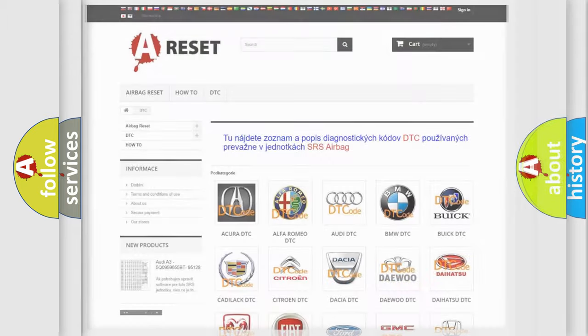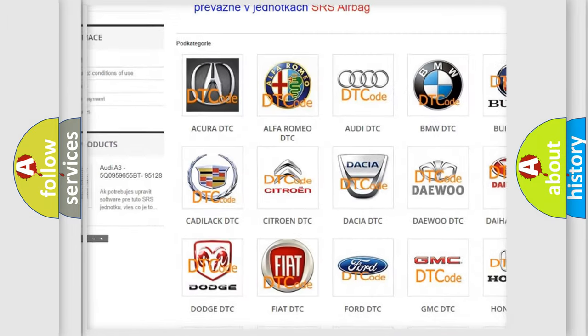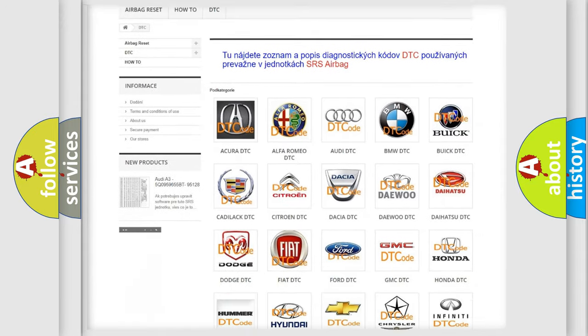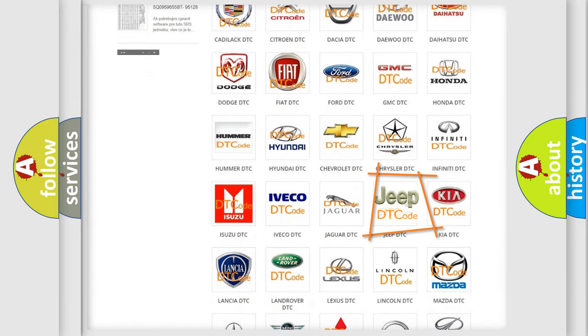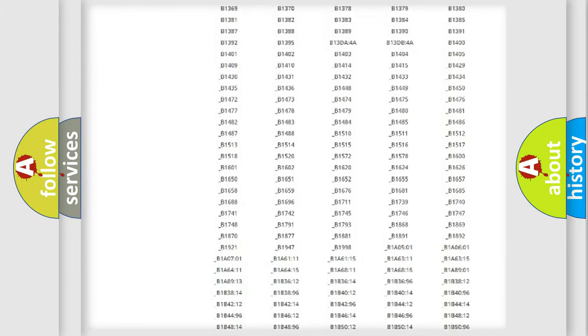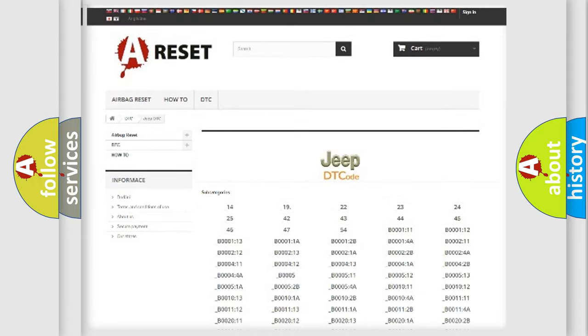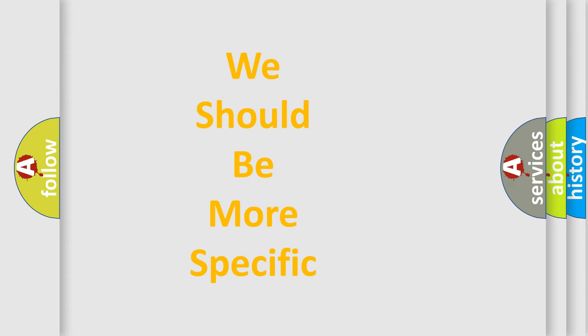Our website airbagreset.sk produces useful videos for you. You do not have to go through the OBD2 protocol anymore to know how to troubleshoot any car breakdown. You will find all the diagnostic codes that can be diagnosed in Jeep vehicles, and many other useful things. The following demonstration will help you look into the world of software for car control units.